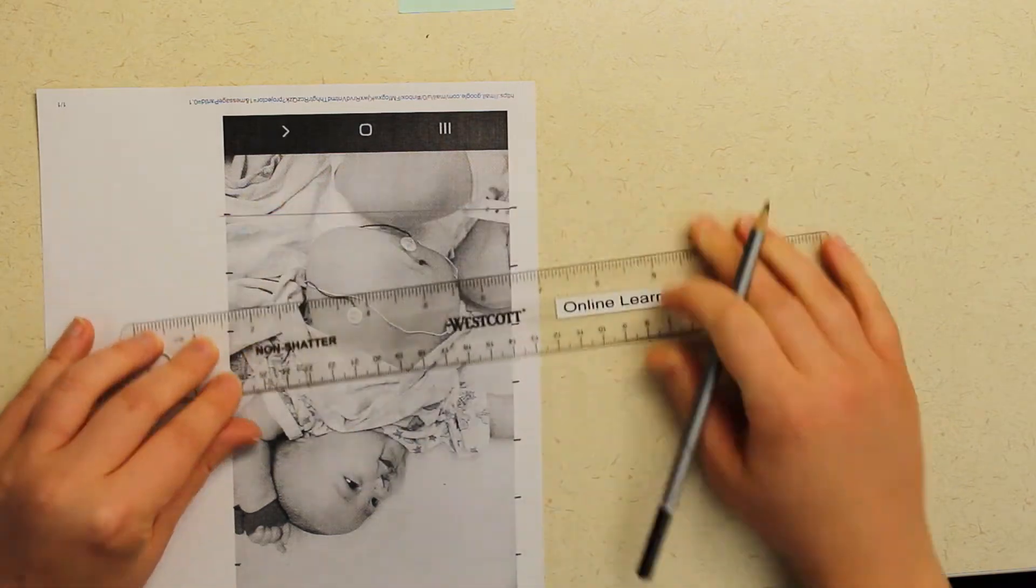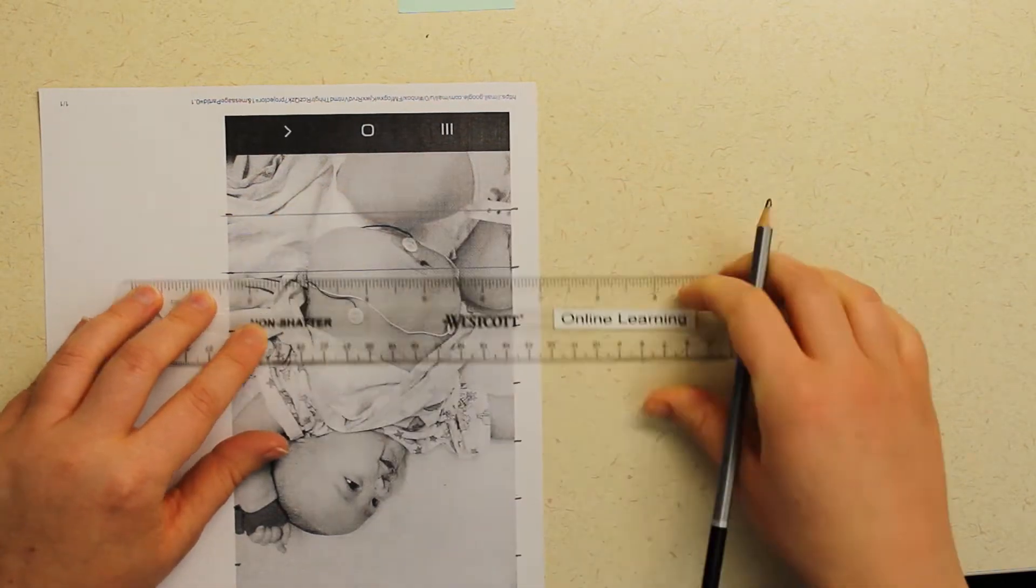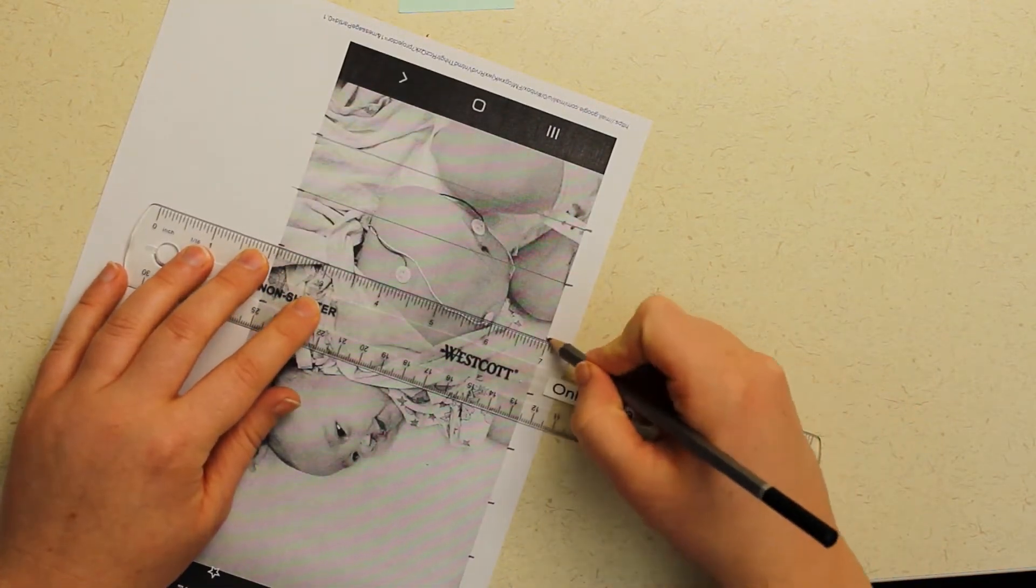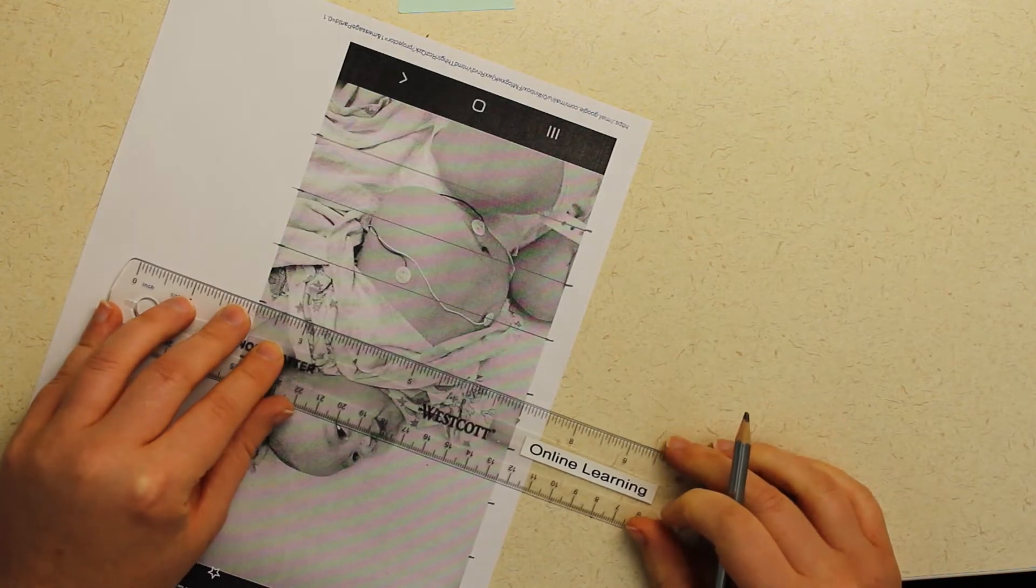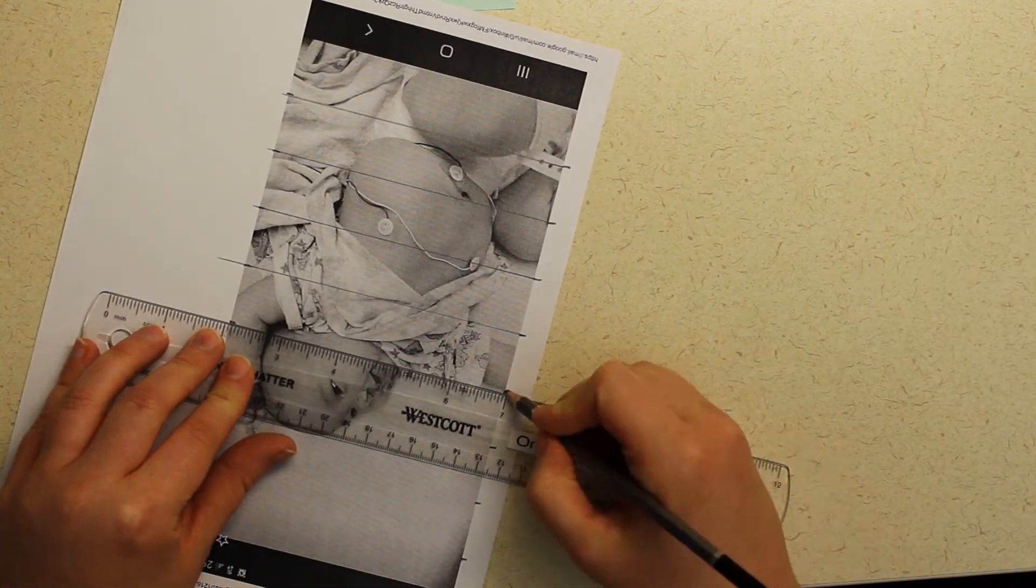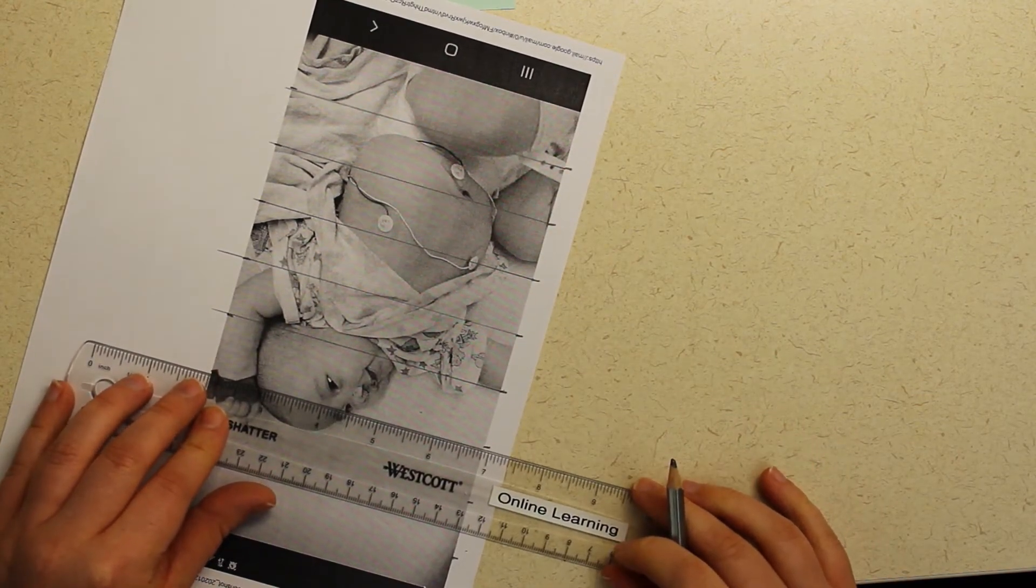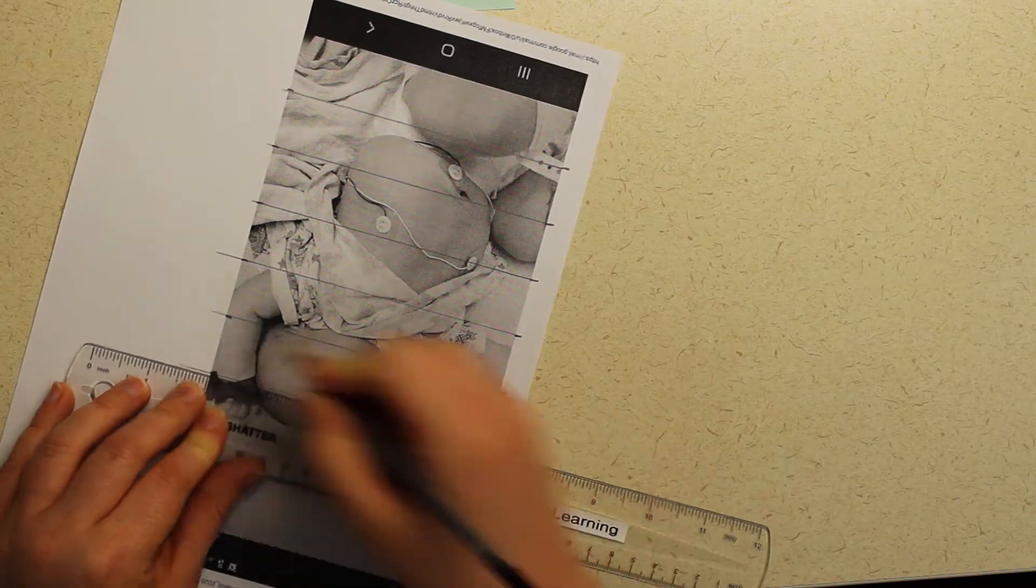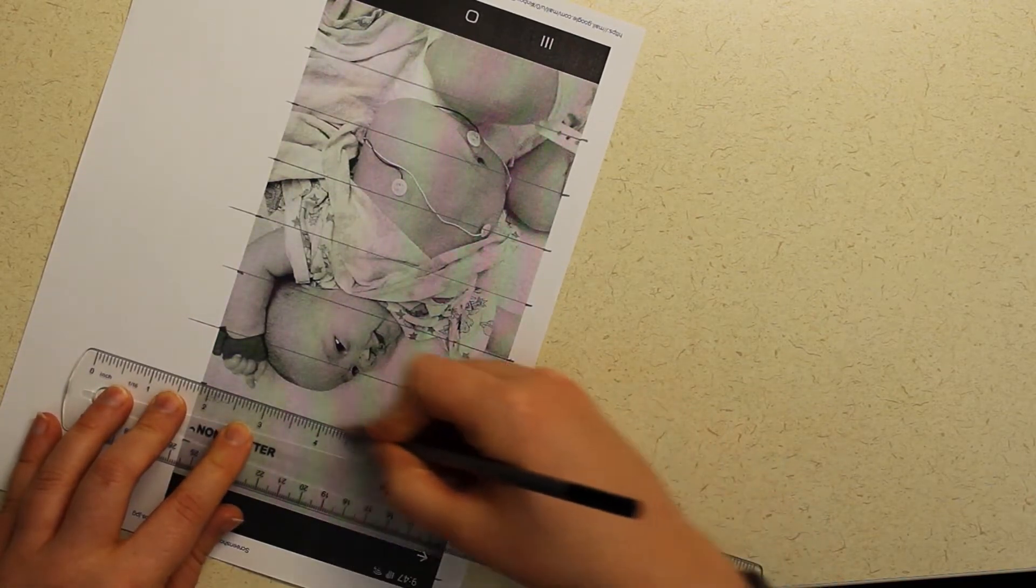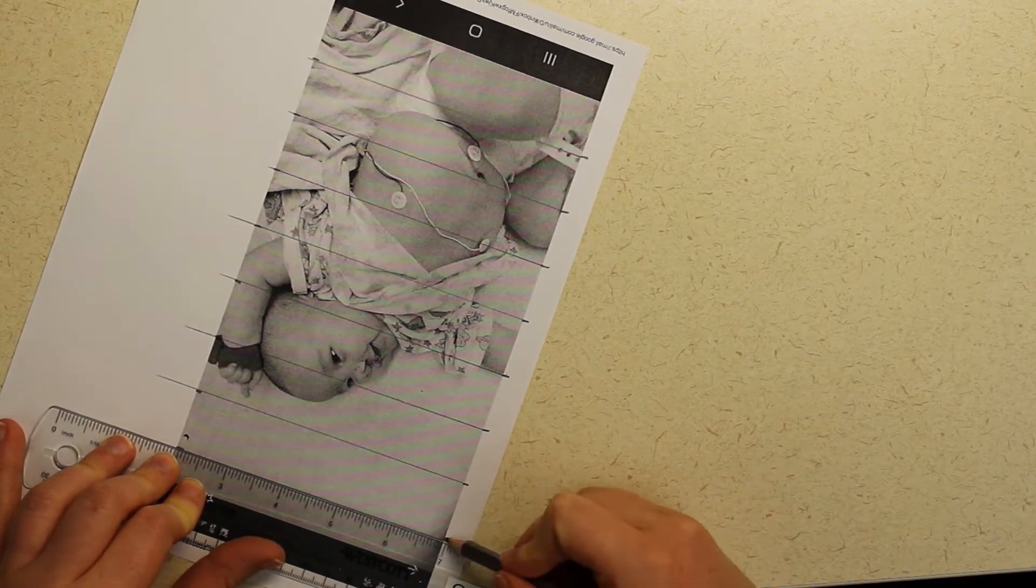I start by lining the ruler up along one side of the picture and I draw a dot every one inch. Then I line it up on the other side of the picture and do the same thing. The reason I do that is because then I have two dots to connect instead of just having one dot. You don't want any of your boxes to turn into v's or some to be wider or smaller than the others. You really need perfect squares for this technique to work.